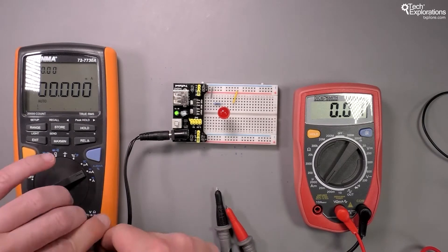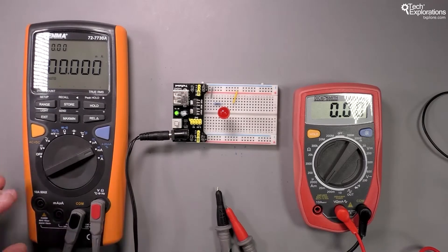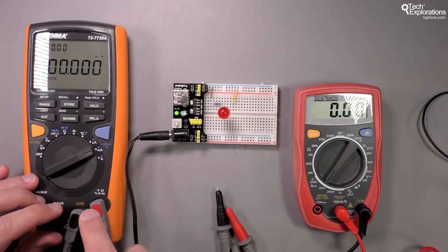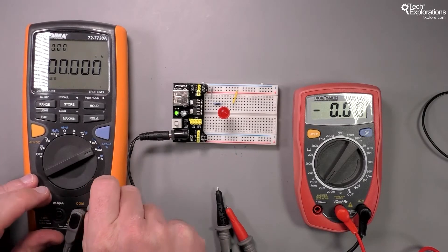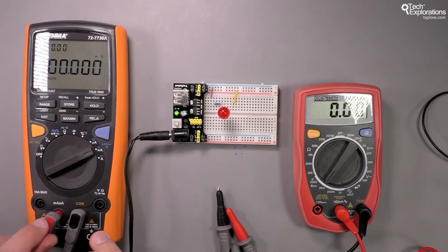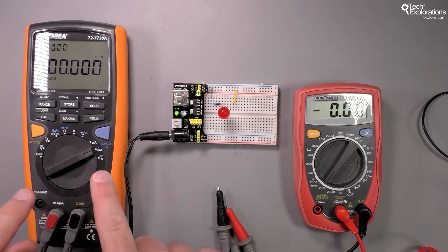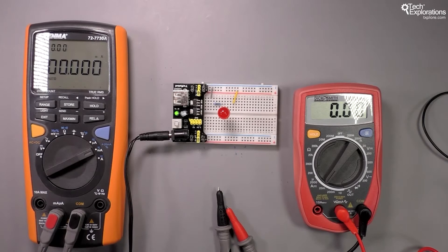With my Tenma multimeter, I need to move the red probe to the amperage measurement connector for milliamps or microamps. The two connectors for current measurements and voltage measurements are separate, indicating that the hardware inside this multimeter is optimized for each individual measurement.